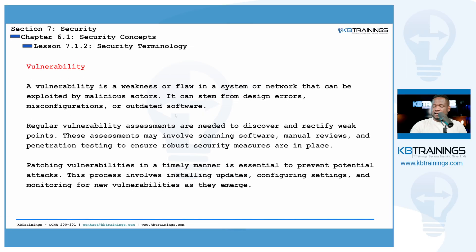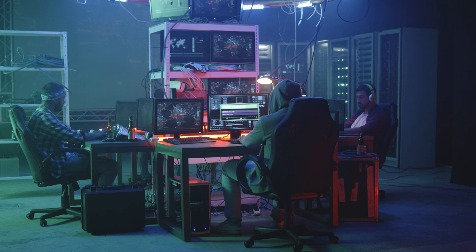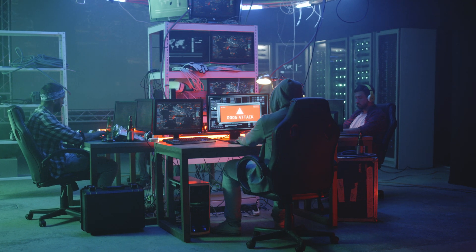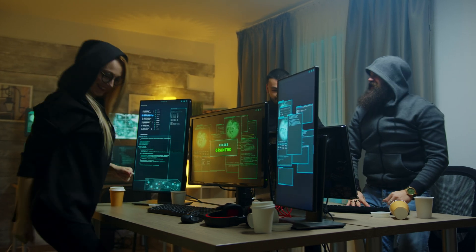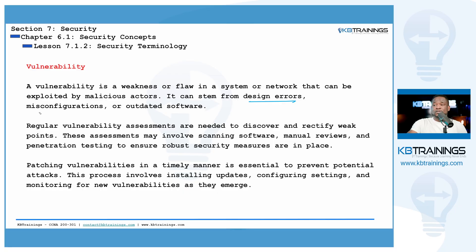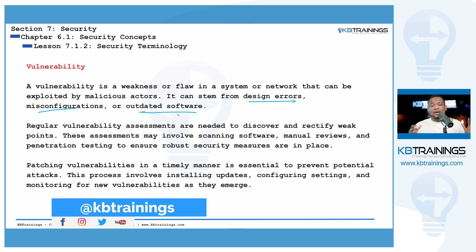The first term is vulnerability. A vulnerability is a weakness in your system. When your information system is built, it's supposed to be strong and withstand attacks from the outside or even the inside. Vulnerabilities can come from design errors, misconfigurations — for example, you might have an expensive firewall but if you don't configure it well you're still vulnerable — or from outdated software inside your system.